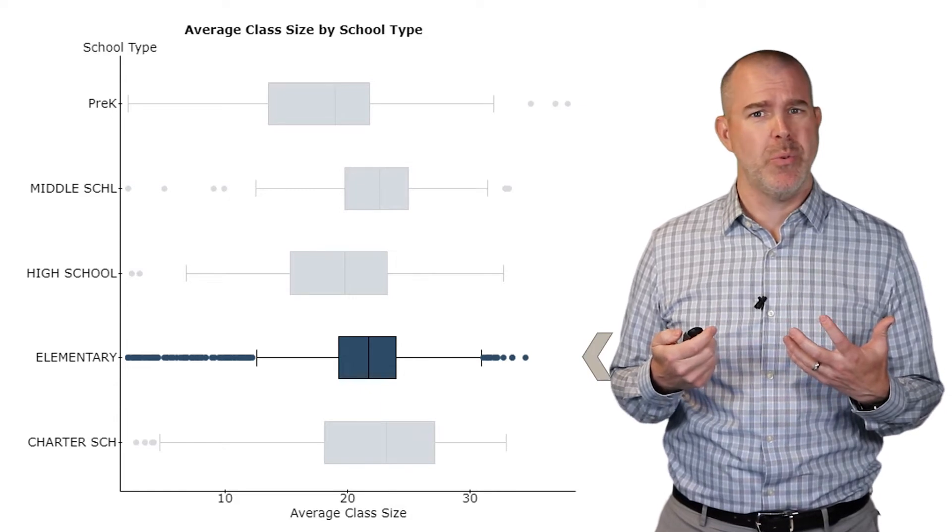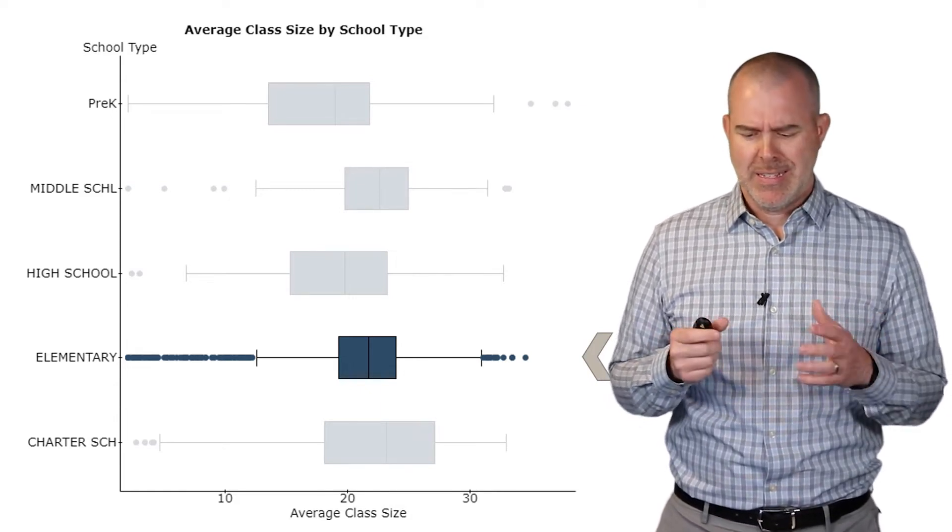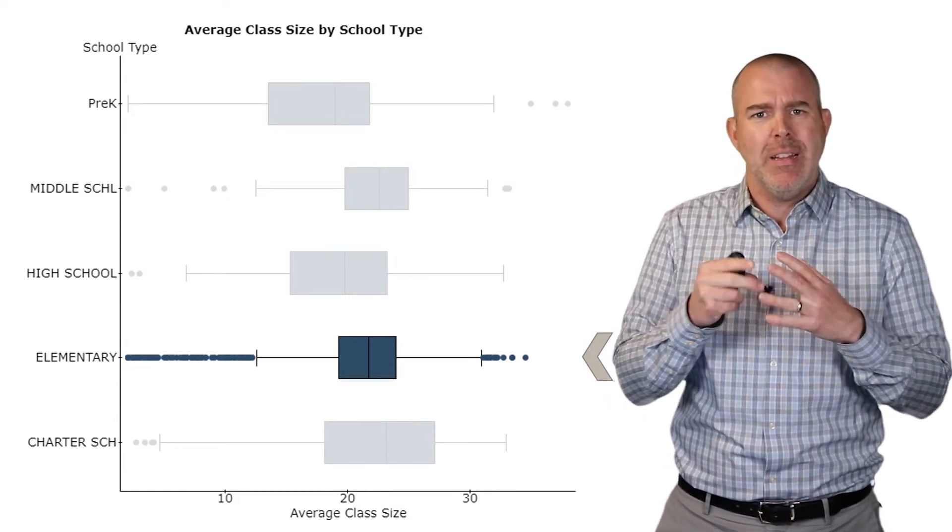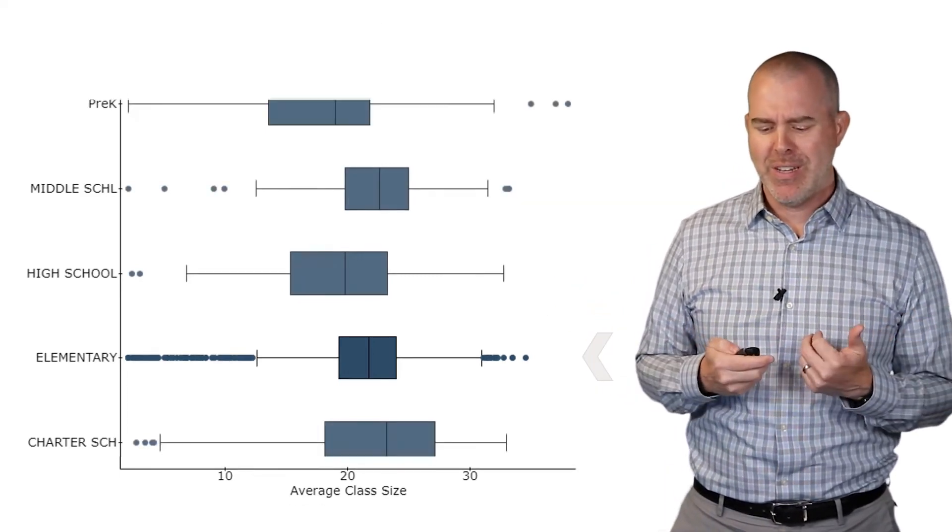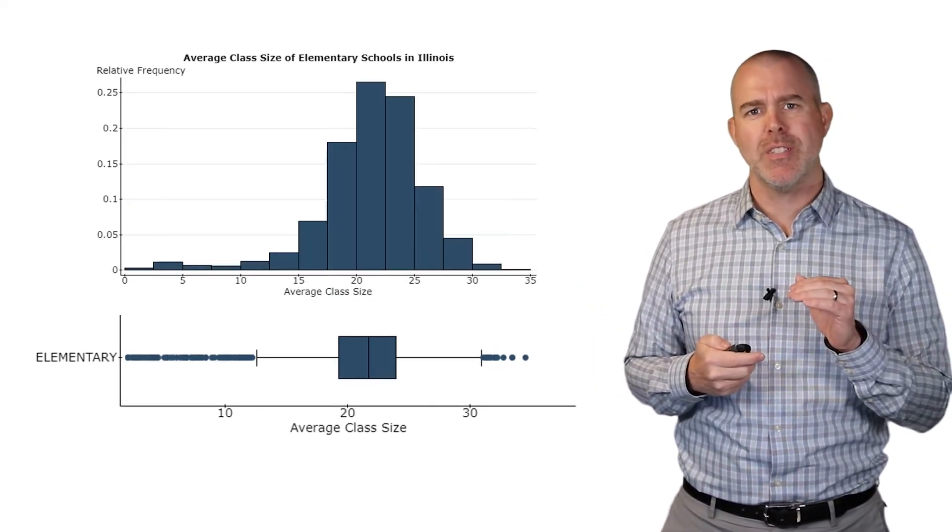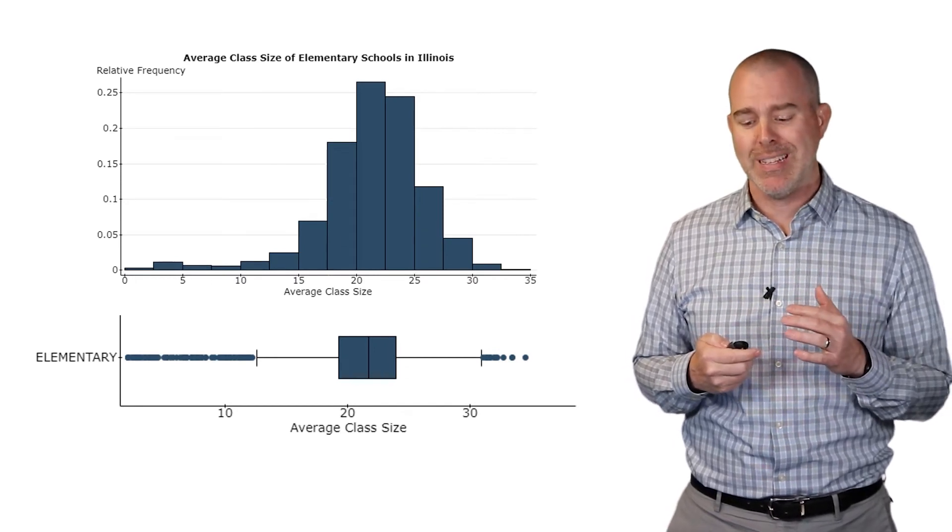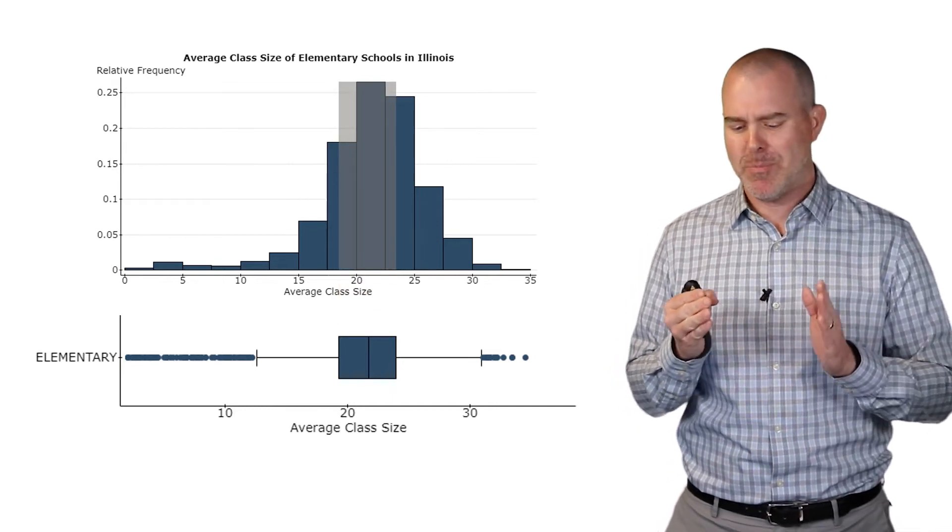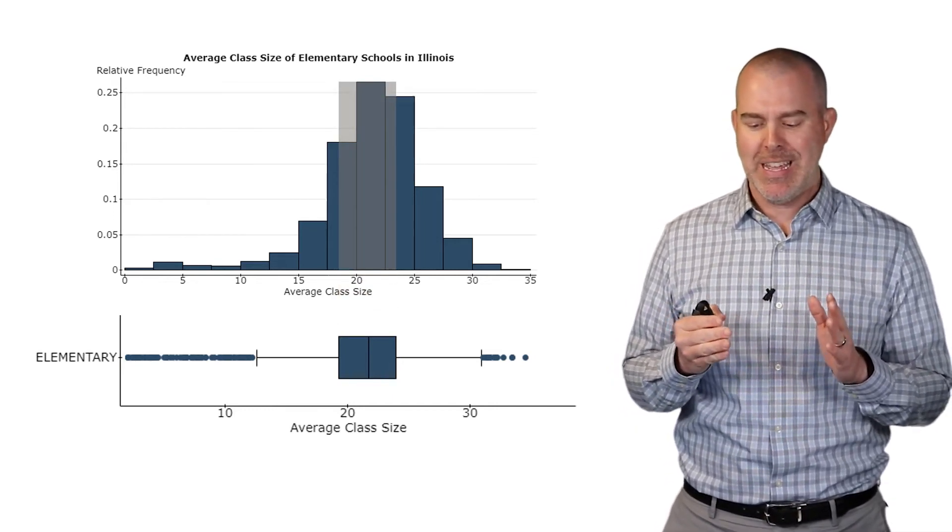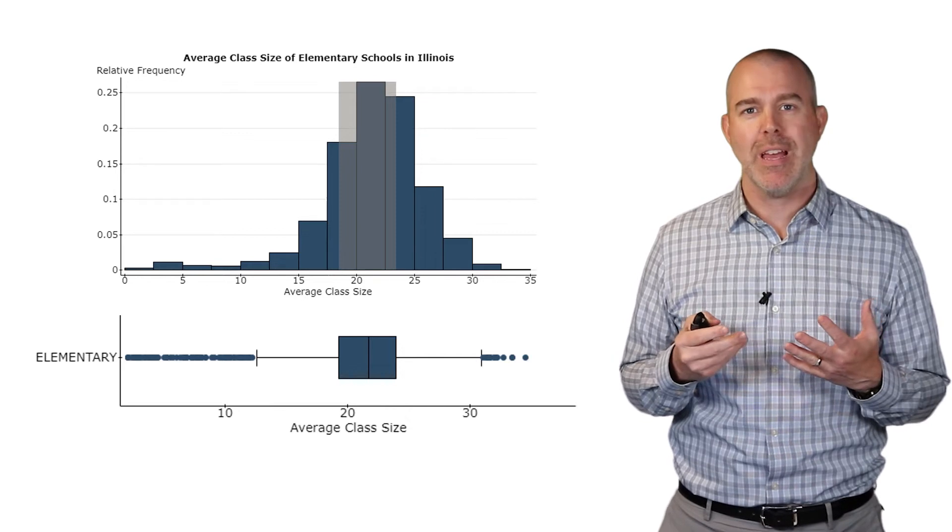The elementary school is really interesting. It seems like they're all condensed in the middle, and then there's a bunch of extreme observations. If we take a look at that one specifically and pull up the histogram, we can see that middle 50% between the first and third quartile, pretty condensed between what is that, 18 and 23. So they're pretty condensed.